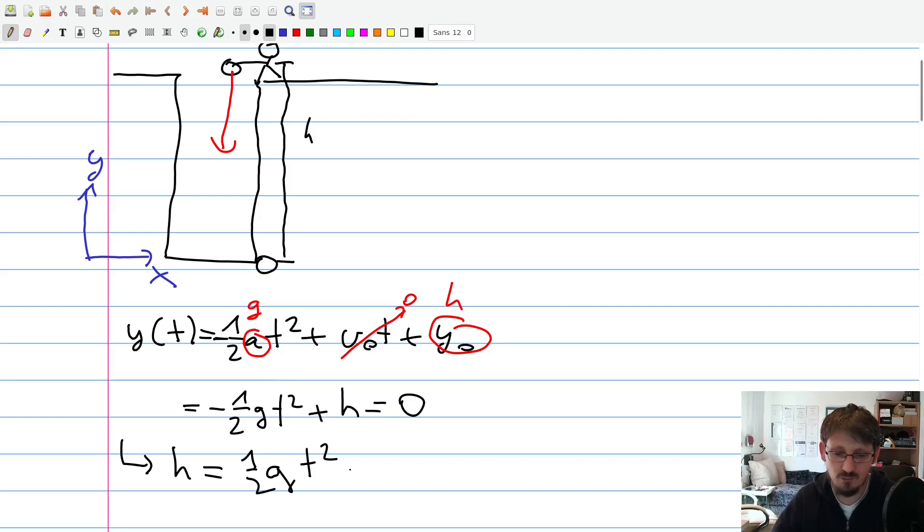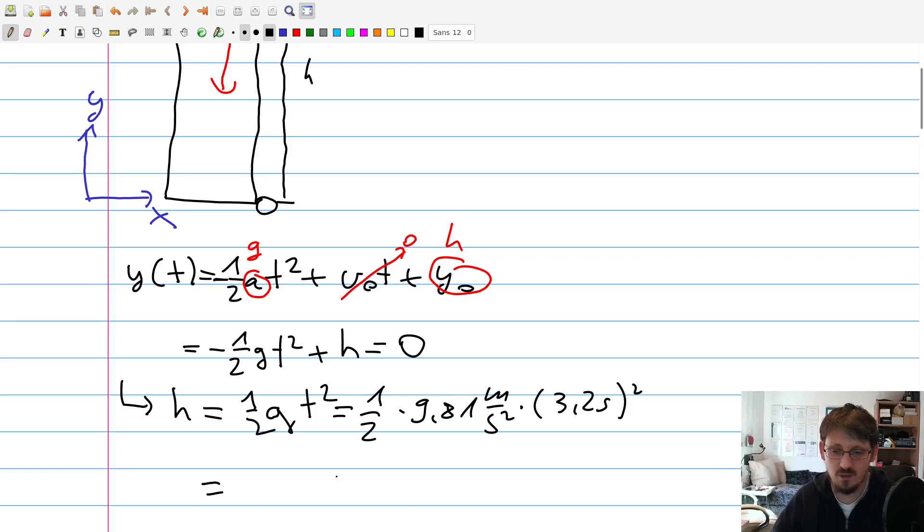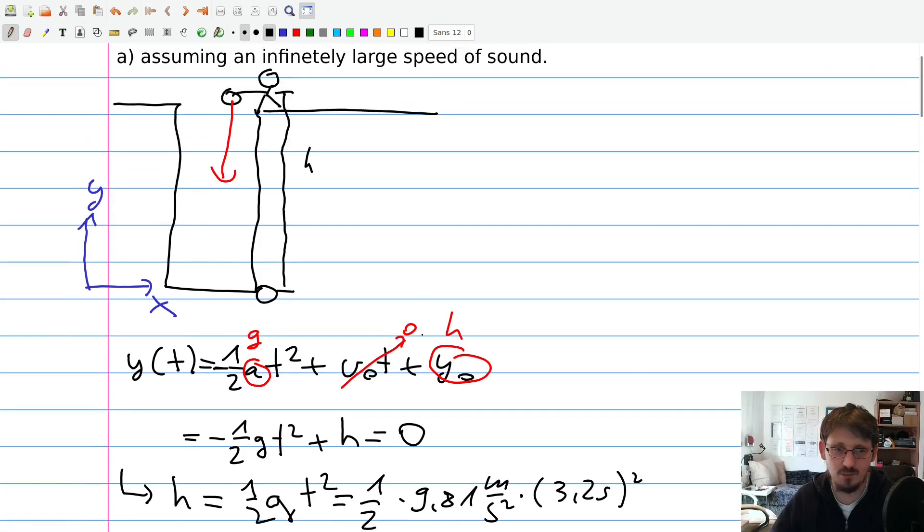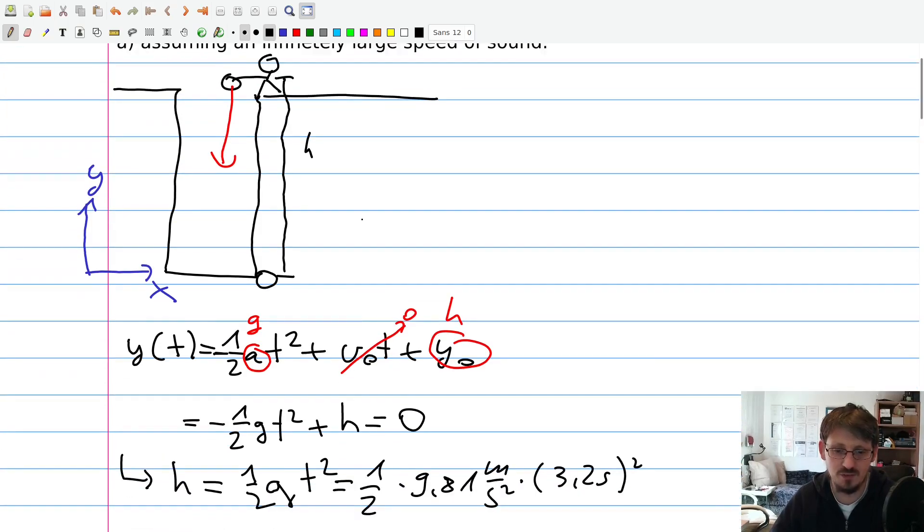Now we can use this formula and we only have to insert now all values. So now we have one half times 9.18 meter per square second times the time here, 3.2 seconds squared. And this gives us, I have calculated this already with my calculator, 50.22 meter. And this is the height of the well by using this method here, and assuming an infinitely large speed of sound.